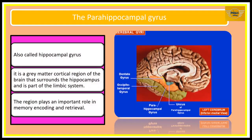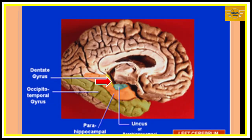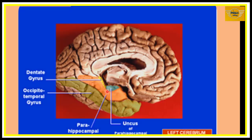The last part of the limbic lobe is the parahippocampal gyrus, which is part of the cerebral cortex surrounding the hippocampus. Here is the hippocampus and the cerebral cortex around it forming the parahippocampal gyrus. This region plays an important role in memory encoding and retrieval.